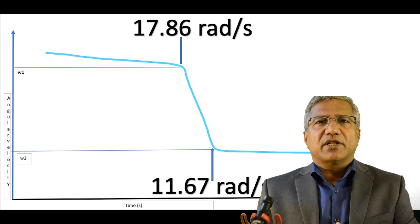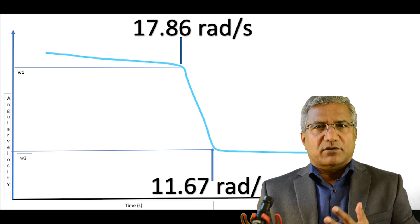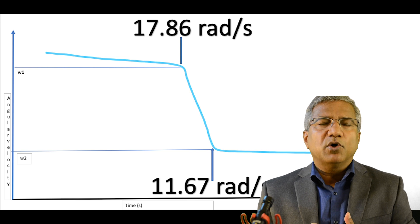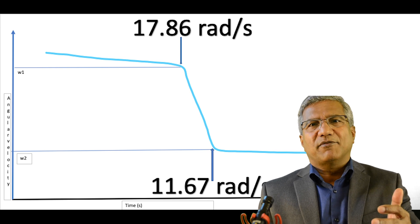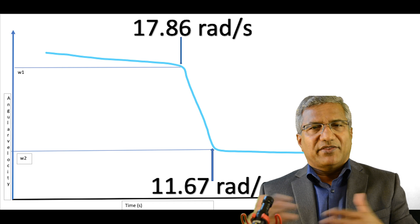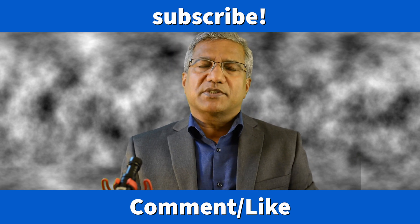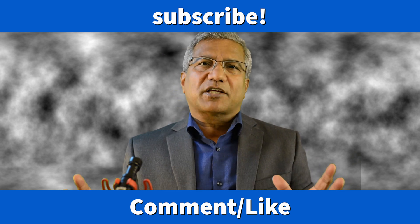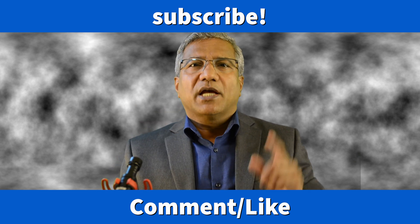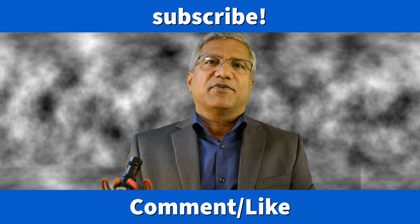The rest of the information is given in the lab document, and you can fill it in. You have to calculate the rotational kinetic energies of both cases and find the percentage loss. You also need to compare the theoretical value of omega-2 and the experimental value of omega-2, then answer the questions that follow. I hope you understood the idea of angular momentum from this lab. Try to complete the lab document and submit it on time. See you in the next video.